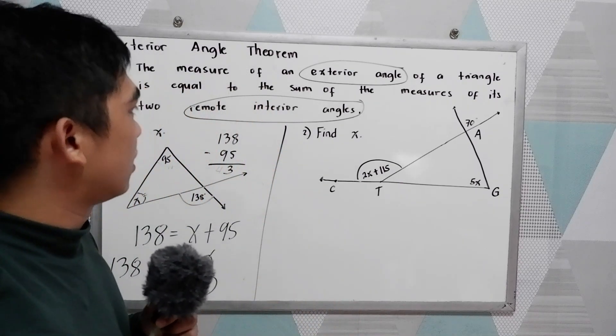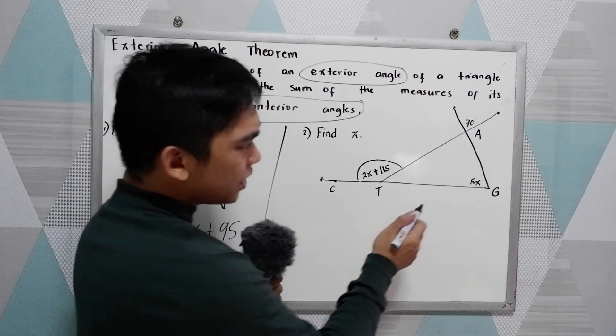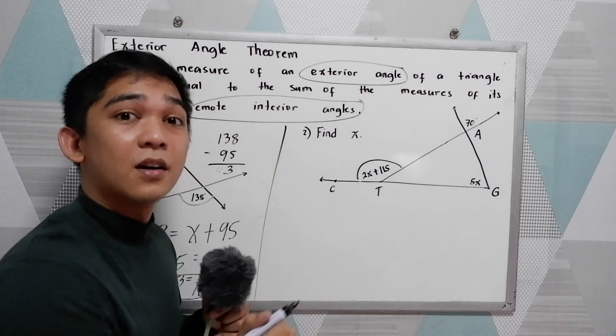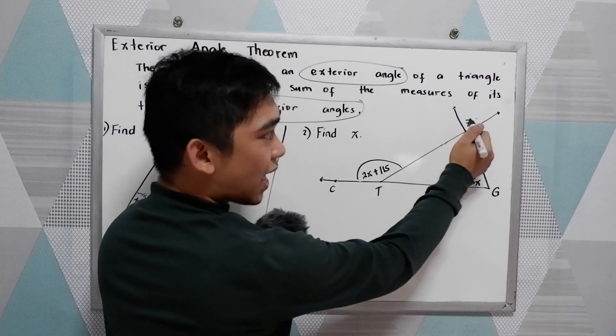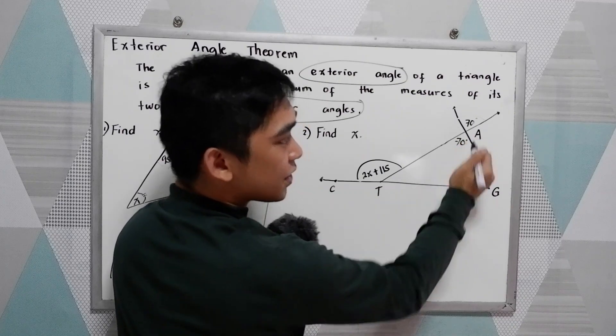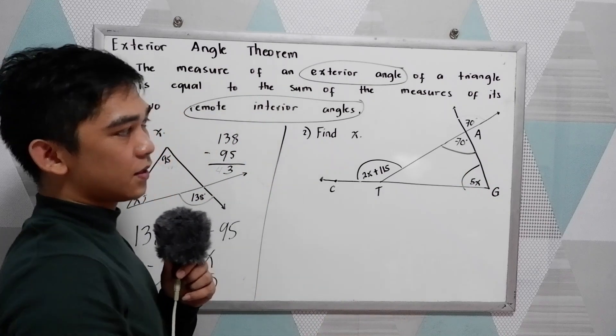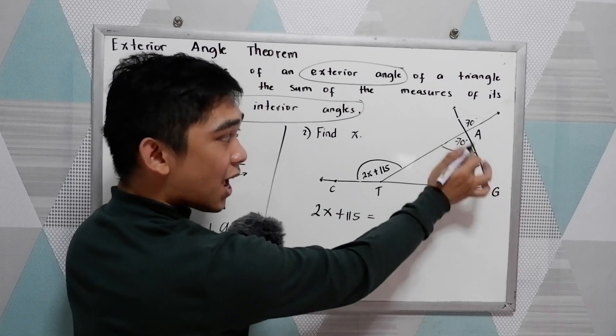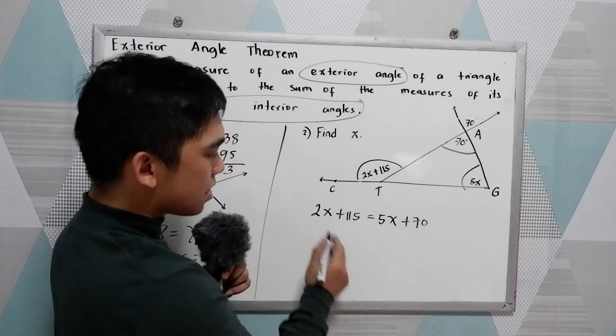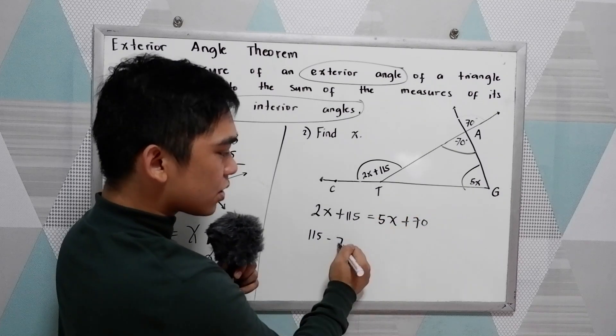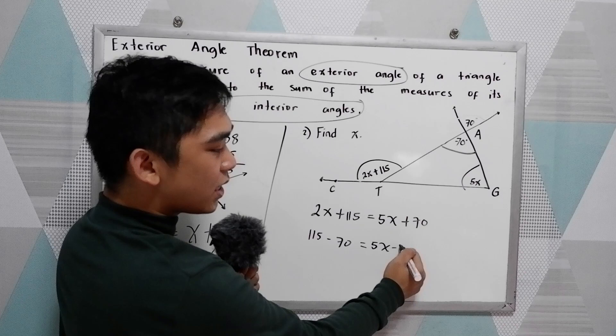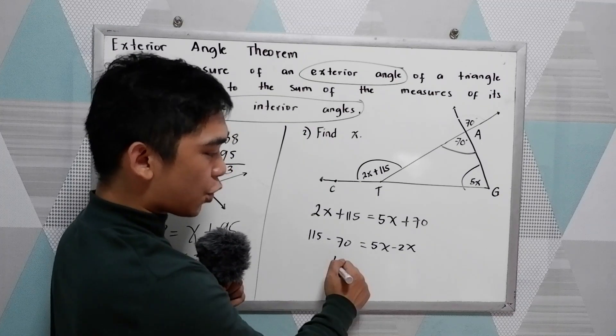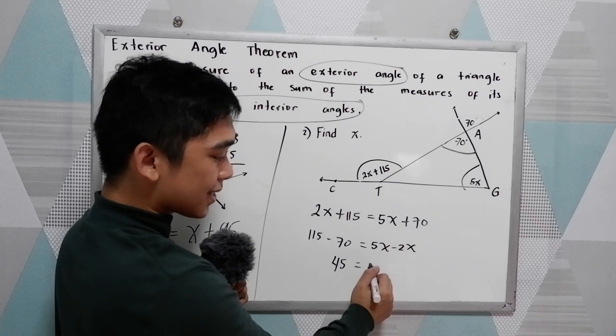In our theorem, we need two remote interior angles. In this case, we want to have 5X. But take note, we have another given here, 70 degrees. Following our vertical angle theorem, if this is 70, this angle is also 70 degrees. Now we have two given. We can now get our equation: 2X plus 115. Now we have 115 minus 70 is equal to 5X minus 2X. So 115 minus 70, that is 45, is equal to 5X minus 2X, that is 3X.